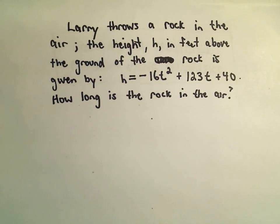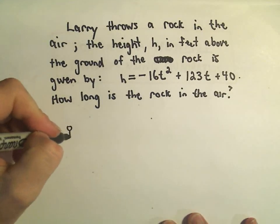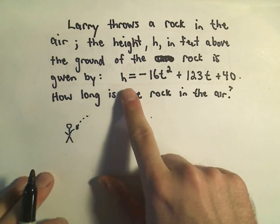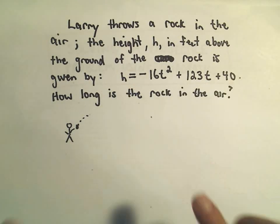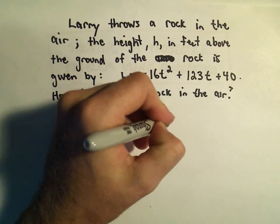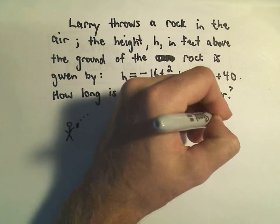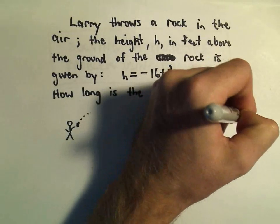Okay, so here's our good friend Larry throwing his rock in the air. Notice just one thing when you look at this equation: h equals negative 16t squared plus 123t plus 40.